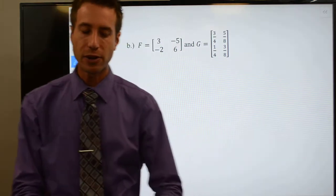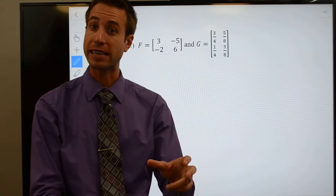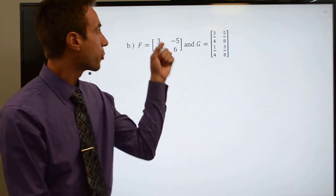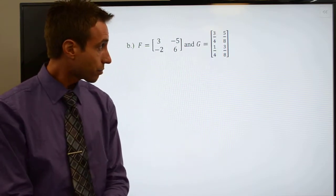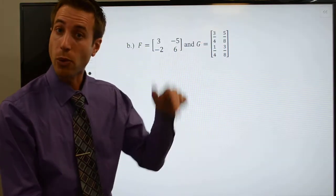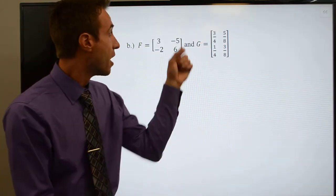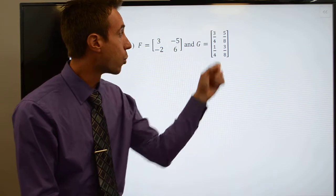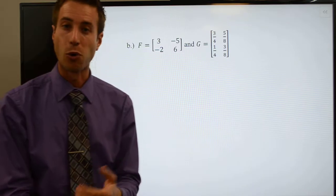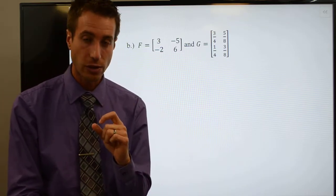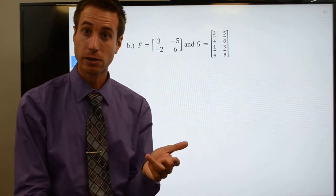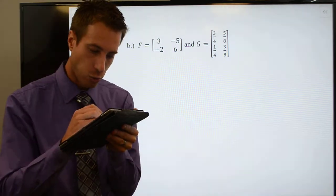The fastest way to find out if two matrices are inverses is to multiply them together — if you get the identity matrix, then they must be inverses of each other. Three times three-fourths: three times three is nine, so nine-fourths. Negative five times one-fourth gives negative five-fourths. So I have nine-fourths minus five-fourths — nine minus five is four, four over four, which is one. So F times G starts off with a one. I needed that first element to be a one, and it is.